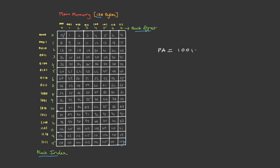Suppose the CPU generates physical address 1001001 — in decimal notation this is 73. If you search for 73 in the memory cells, it belongs to row number 9 and column 1. If you carefully observe, the block offset is 001, and looking at the physical address, the first three bits — or the least significant three bits — represent the block offset. Now look at the block index: it is 1001. In the physical address, the bits other than the offset match with the block index.